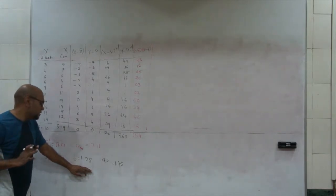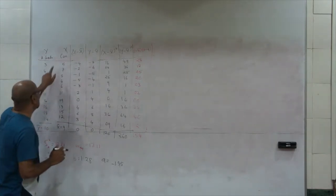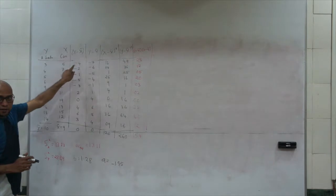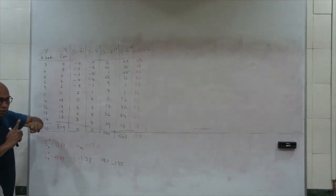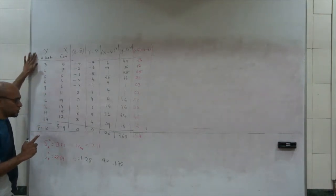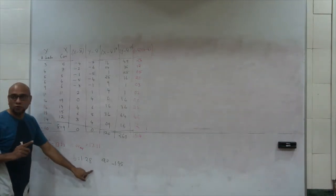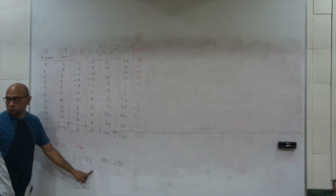It means that as x increases by 1 unit, so as you increase conscientiousness by 1 unit, the academic grades would increase by 1.28 units.